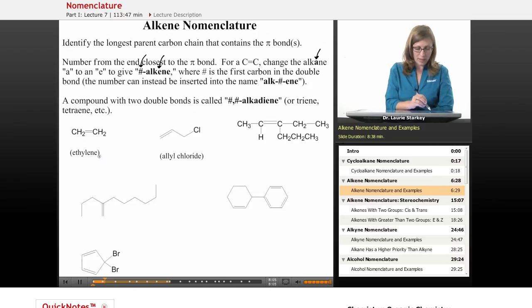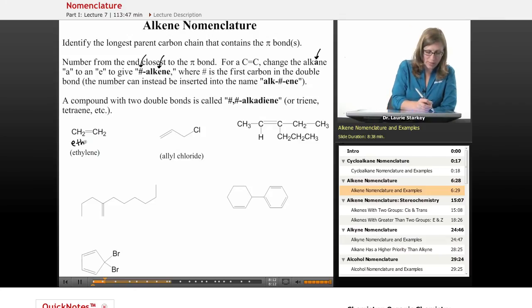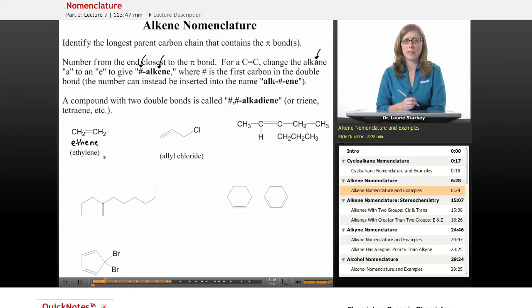But the IUPAC name, it would be an ethane derivative because it's two carbons. And instead of calling it ethane, we call it ethene. So not a big difference between the common name and the IUPAC name, but the IUPAC name is ethene.